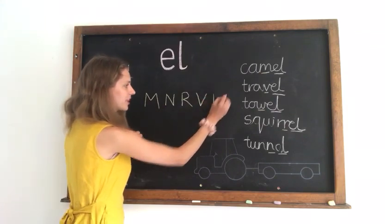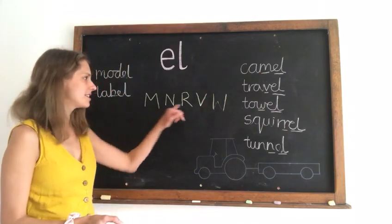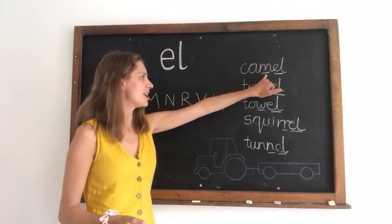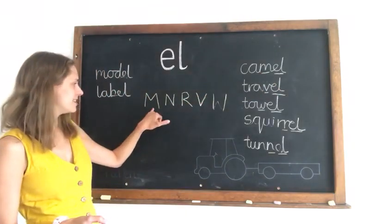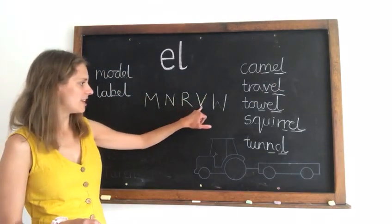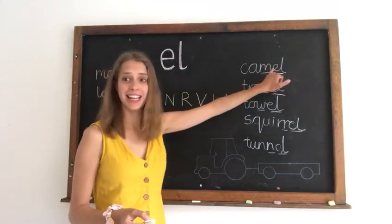and then a V, and a W. So if your word, before the word ending, has one of these letters, M, N, R, V, or W, it's usually E-L.